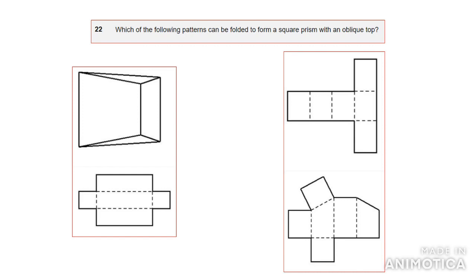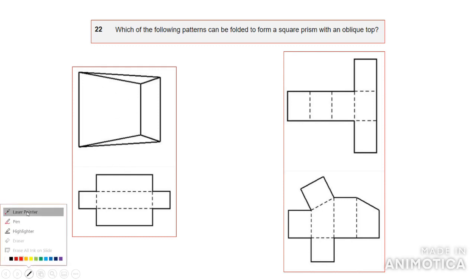Question 22: which of the following patterns can be folded to form a square prism with an oblique top? An oblique top is an irregular top that is not isometric — it has a different angle. Looking at these options, we are looking for something with a square base. Some options don't have a square base, so those are out.